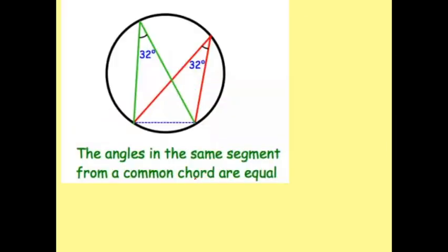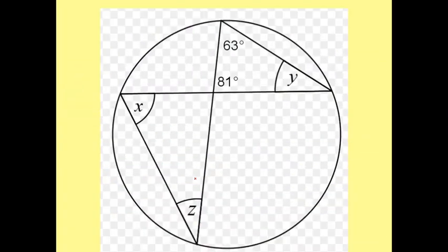Right, for example, these ones here are both 32. Now, let's do this one here - we can actually work out all of these angles. Now, if you look to the right for y, I know that's a triangle, so I'll do 180 take away 81 take away 63, which means this one here must be 36 degrees.